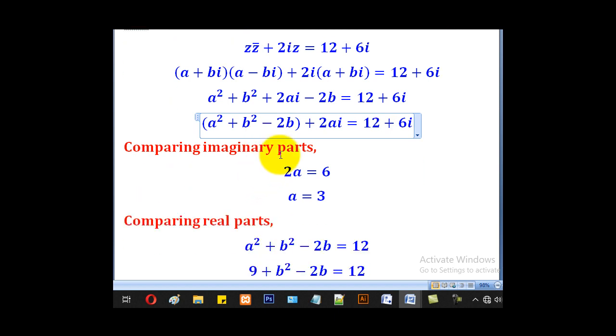Then we shall now compare real parts and imaginary parts. Remember the concept for equality: real parts are equal and also imaginary parts are equal on either side. So for imaginary parts, we shall get this 6i and this 2ai, so 2a and 6 are equal. We shall set 2a equal to 6 to get a as 3.